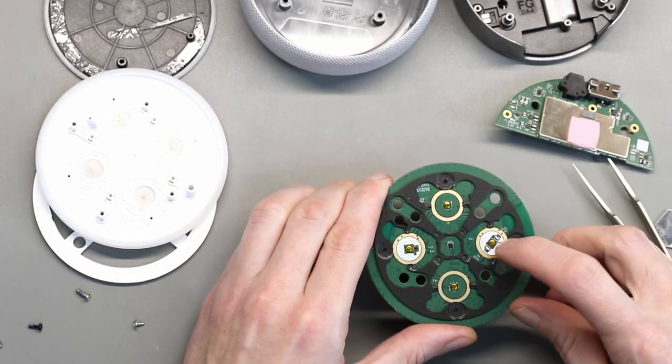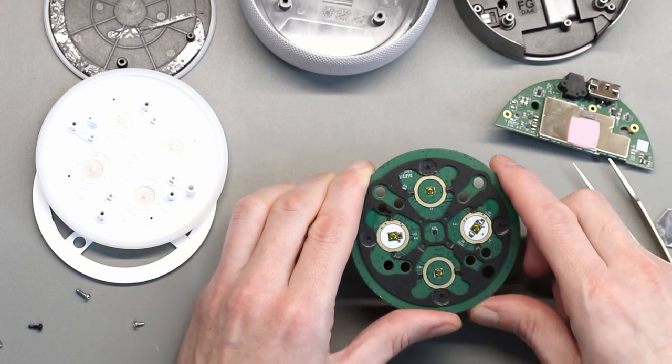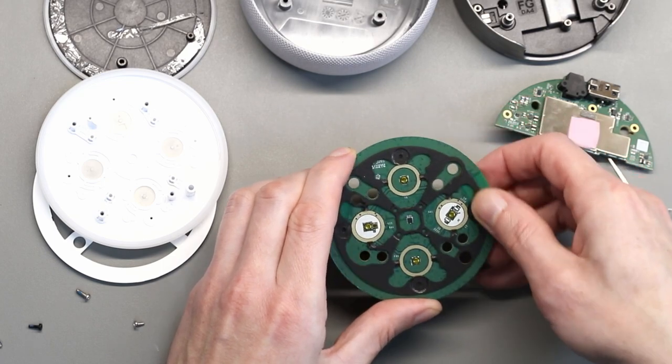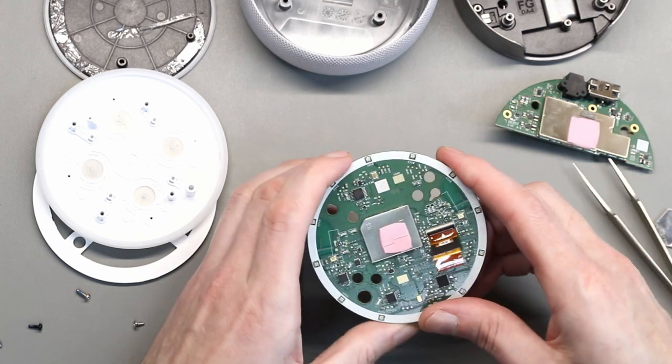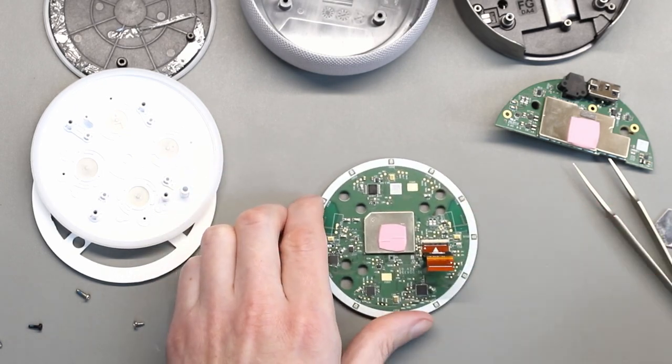So on this side you've got the small buttons from the top and a rubberized gasket around the edge here. On this side you've got all the various circuitry which I'll look at in a minute under the microscope.